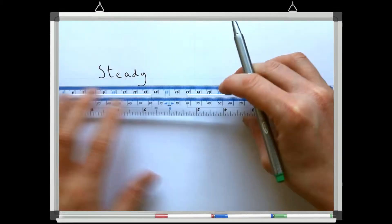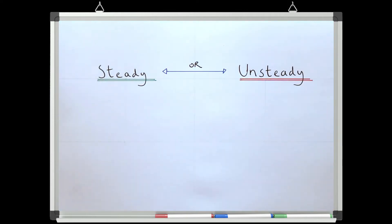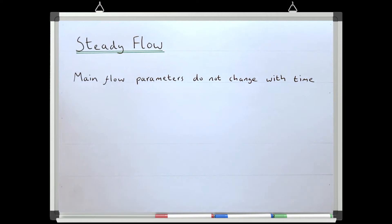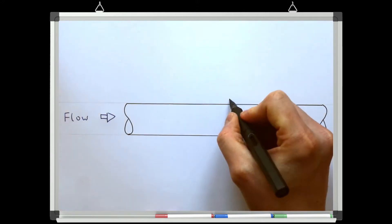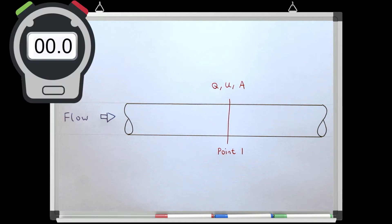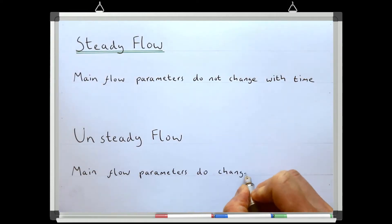The first way to differentiate flows is to identify if a flow is steady or unsteady. A steady flow is one where the main flow parameters do not change with time. If we think of a flow in a pipe and define a specific point, the flow will have a discharge, a velocity, and an area at that point. If these three parameters are all constant with time, the flow is steady. If any of these parameters were changing with time, this would be an unsteady flow — so an unsteady flow is one where any of the main flow parameters change with time.